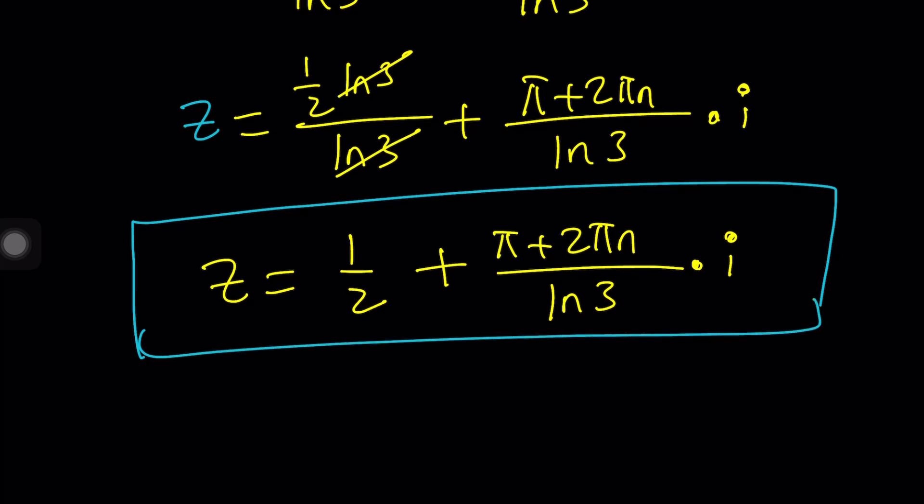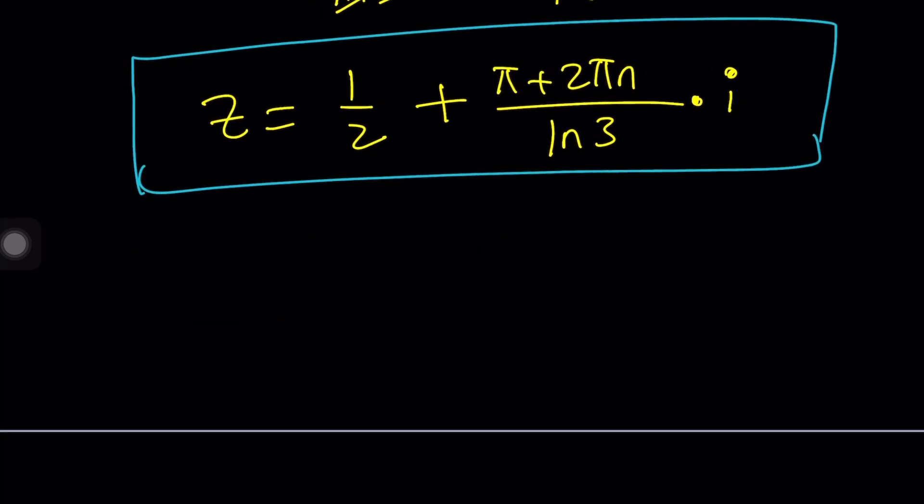But what is it numerically approximately? You can go ahead and plug in the values or use a calculator. It'll give you some answer. Well, let's simplify this a little bit more or just look at the principal value. If n is equal to 0, then z becomes 1 half plus π over ln 3 times i.